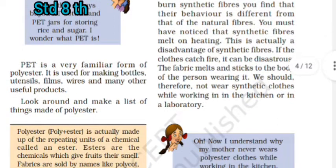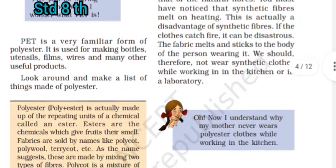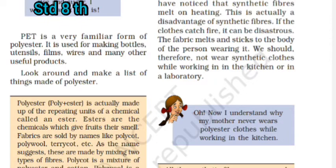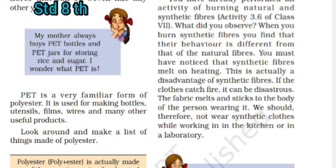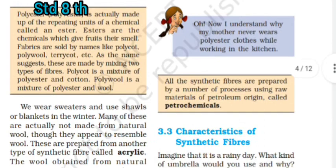Here is a quote: 'My mother always buys PET bottles and PET jars for storing rice and sugar — I wonder what PET is.' PET is a very familiar form of polyester. It is used for making bottles, utensils, films, wires, and many other useful products. You can look around and make a list of things made of polyester.